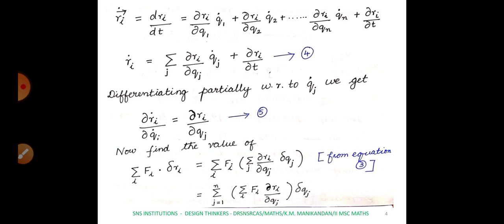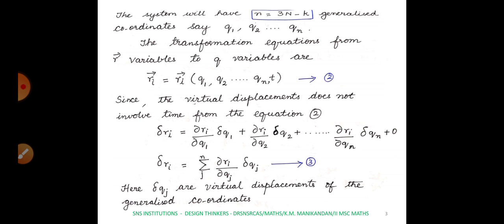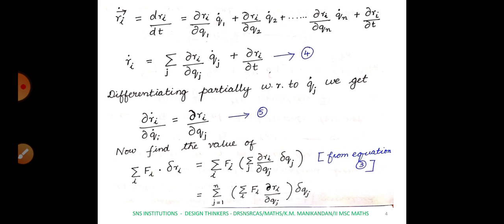Differentiating with respect to t, we get ri-dot = summation j of (∂ri/∂qj) qj-dot + ∂ri/∂t — call this equation 4. This is obtained from equation 2.